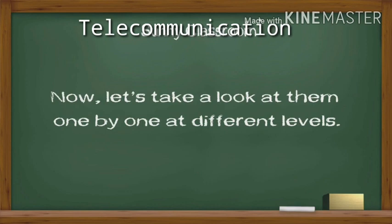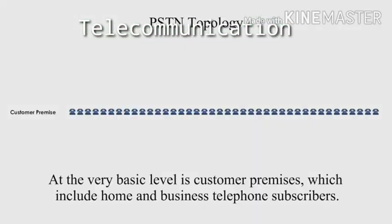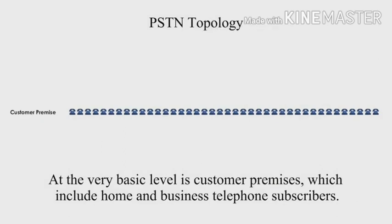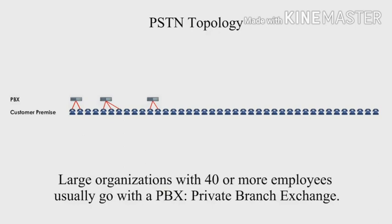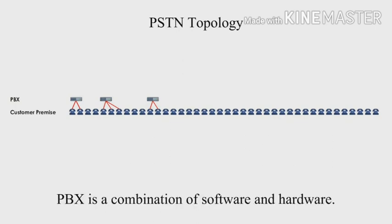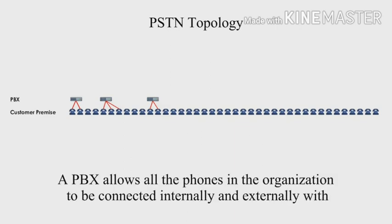Let us take a look at them one by one at different levels. At the very basic level is customer premises, which include home and business telephone subscribers — they are the PSTN users. Large organizations with 40 or more employees usually go with a PBX, Private Branch Exchange. PBX is a combination of software and hardware.